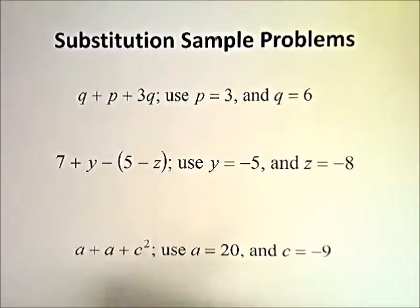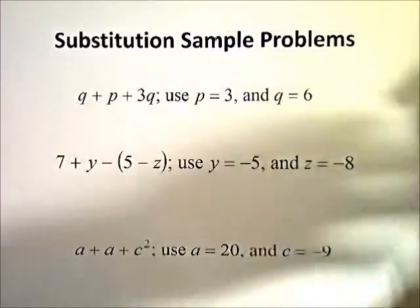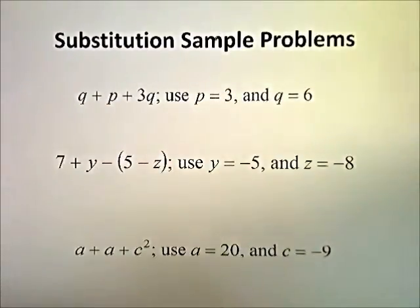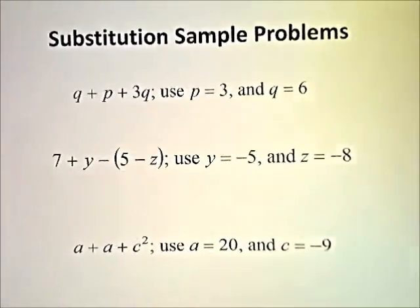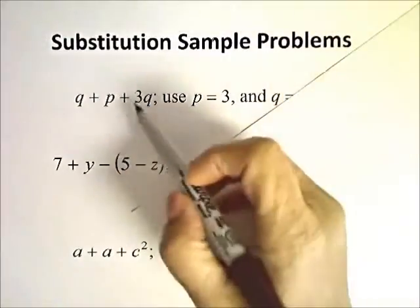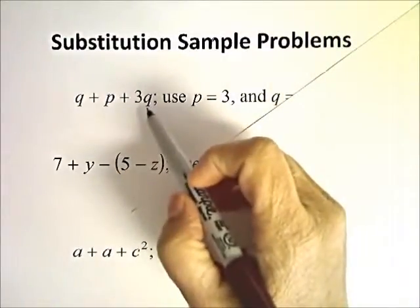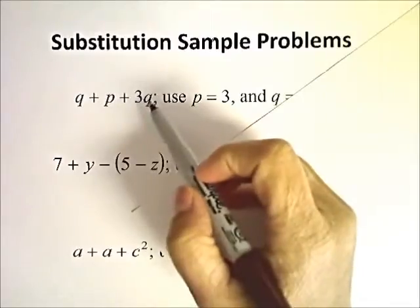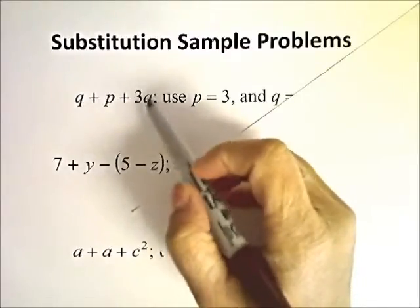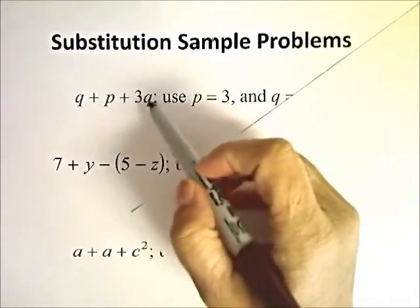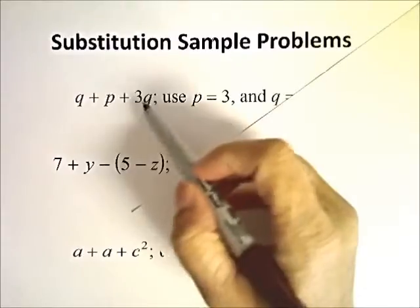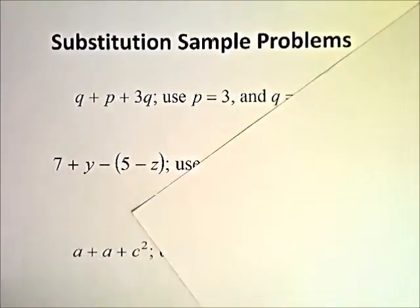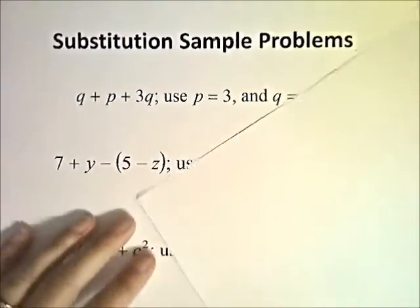We have q plus p plus 3 times q. Anytime you see a number beside a variable, that's going to tell you to multiply. This is the coefficient and this is the variable. Together they become the coefficient and you don't have to write q plus q plus q — you can just write 3q. So let's solve this problem.